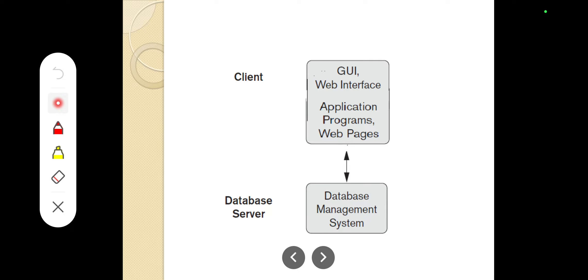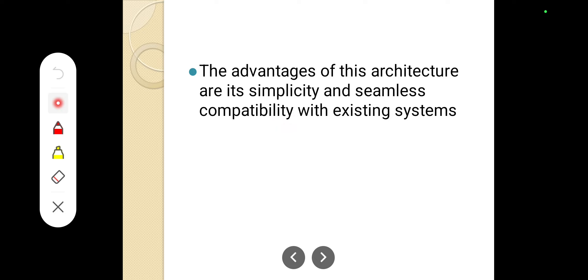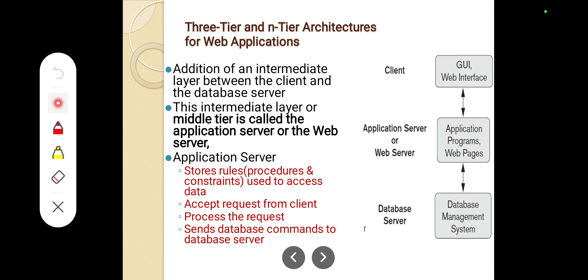The advantage of the two-tier architecture is simplicity and seamless compatibility with existing systems. Next is the three-tier architecture, which is used for web applications.